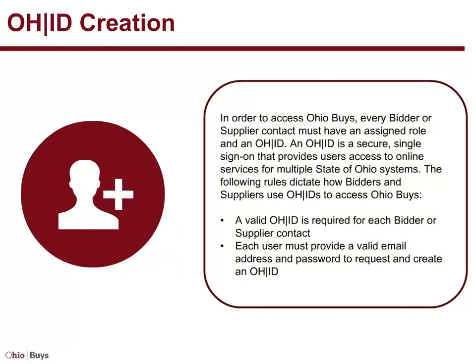In order to access OhioBuys, every bidder or supplier contact must have an assigned role and an OHID. An OHID is a secure, single sign-on that provides users access to online services for multiple State of Ohio systems. The following rules dictate how bidders and suppliers use OHIDs to access OhioBuys: a valid OHID is required for each bidder or supplier contact, and each user must provide a valid email address and password to request and create an OHID.